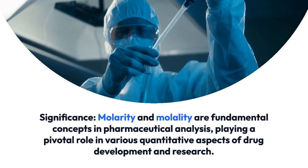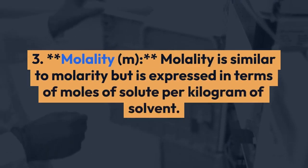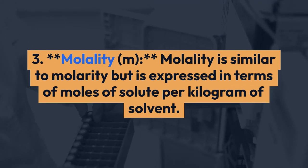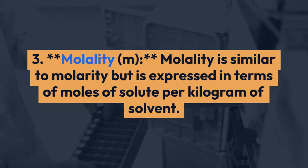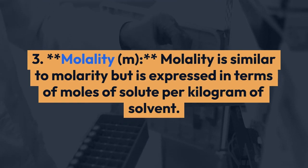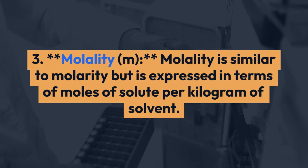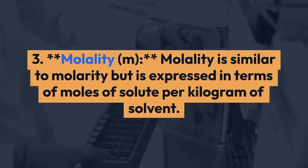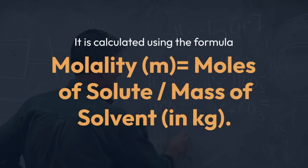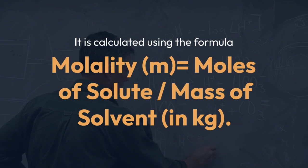Molality (m) is similar to molarity, but is expressed in terms of moles of solute per kilogram of solvent. It is calculated using the formula: molality (m) equals moles of solute divided by mass of solvent in kg.